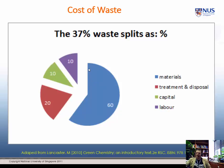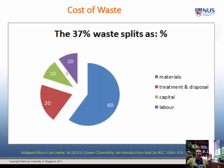Let's ask what that 37% splits up to be. 60% of that 37% is materials. 20% is treatment and disposal of the waste. 10% is capital - new equipment you have to buy. And 10% is labour. So you're setting up a part of your company that costs you money and which you don't really want to set up. In Six Sigma or any manufacturing discipline, this whole economic stream is called waste - it doesn't contribute to the production of your product.